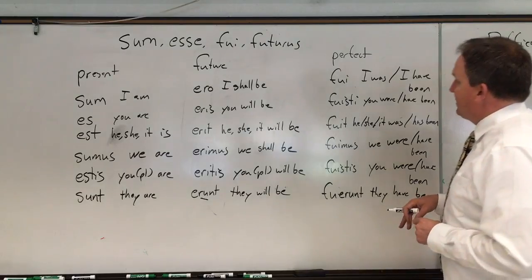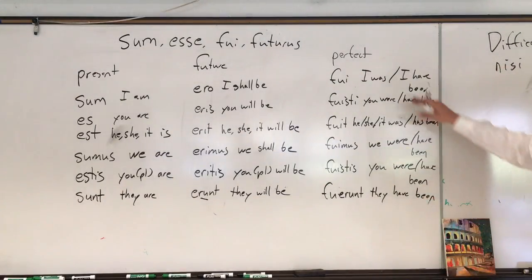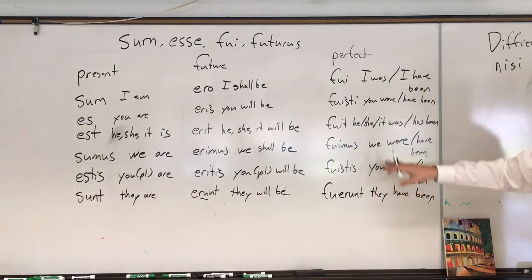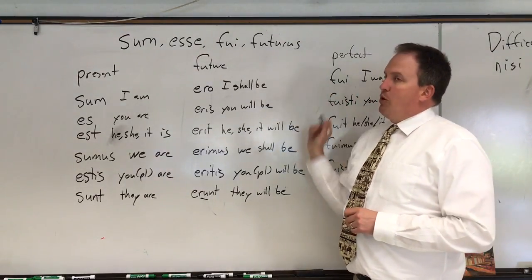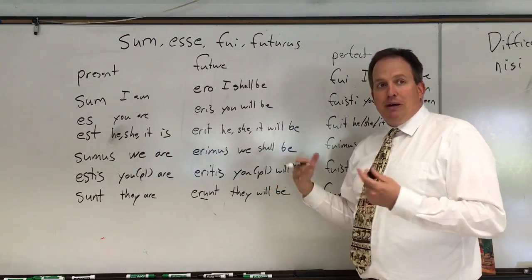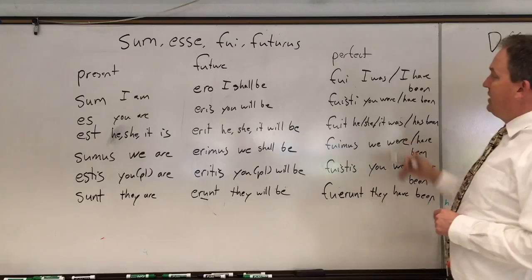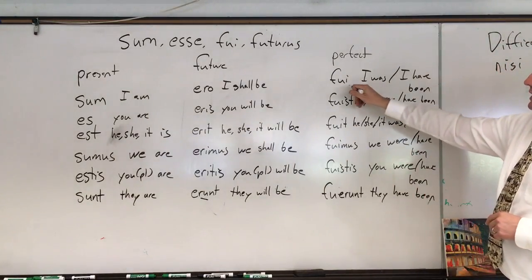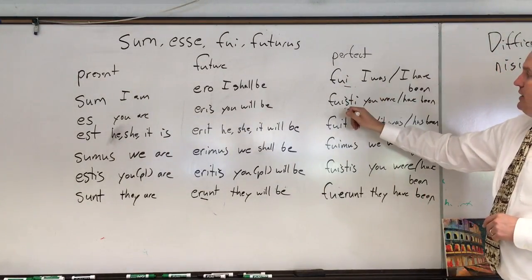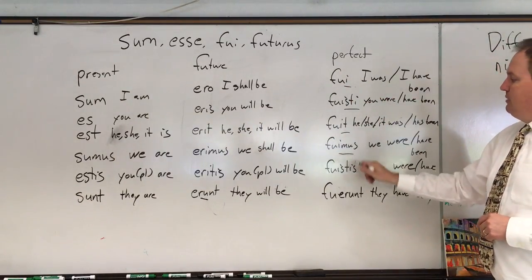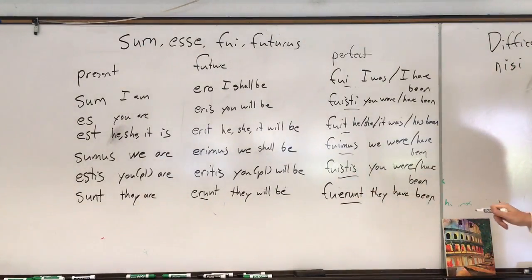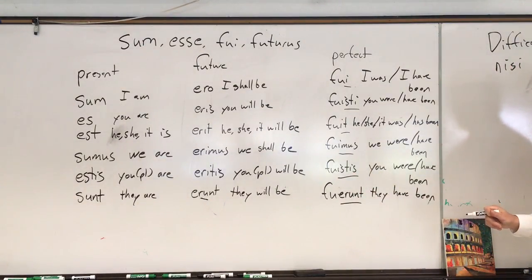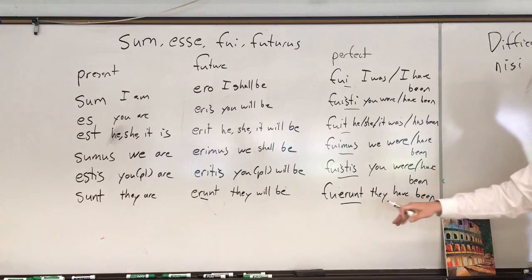The perfect looks weird, but it is normal. You just take the third principal part like always, form the perfect stem by removing the i, and then put the perfect endings on: i, isti, it, imus, istis, erunt. So for sum: fui, fuisti, fuit, fuimus, fuistis, fuerunt.